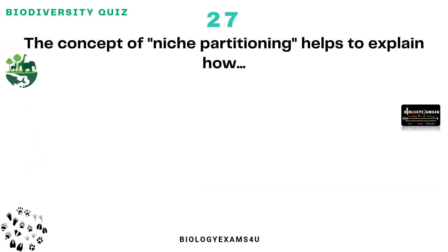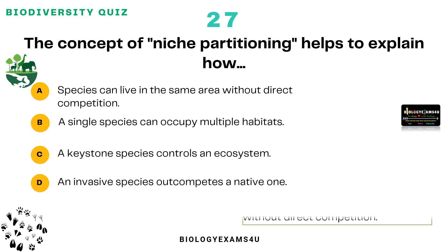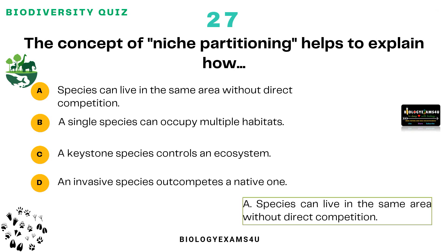Question number 27: The concept of niche partitioning helps to explain how? Option A: Species can live in the same area without direct competition. Option B: A single species can occupy multiple habitats. Option C: A keystone species controls an ecosystem. Option D: An invasive species outcompetes a native one. The correct answer is: species can live in the same area without direct competition.